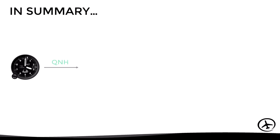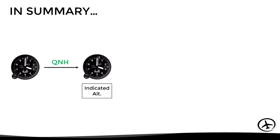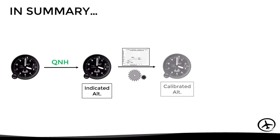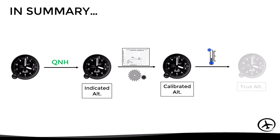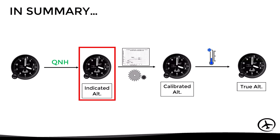In summary, if we adjust the current QNH on the altimeter we obtain the indicated altitude. If we then apply the instrument and position error corrections we obtain the calibrated altitude. And if we then apply the temperature correction we obtain the true altitude. However, as already mentioned, in practice the indicated altitude is the most commonly used, so the pilot only needs to worry about updating the QNH on a regular basis while flying.